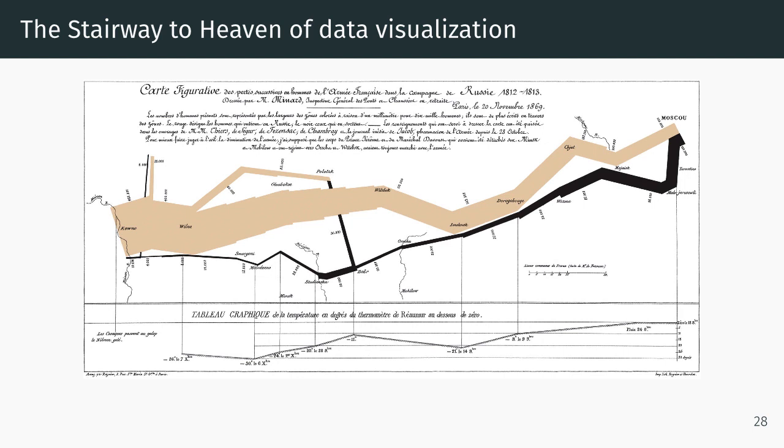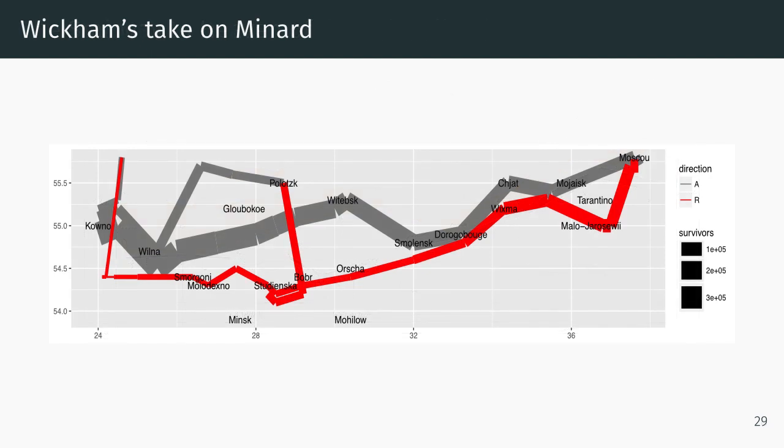Now here is what I would call the stairway to heaven of data visualization. This is by far the most famous single data visualization in the world. It's a map of Napoleon's disastrous Russian campaign, telling a story of a vast number of people dying in the cold Russian winter. I call it the stairway to heaven because it's so pervasive for beginners to try to emulate it. There's even a contest to emulate it.